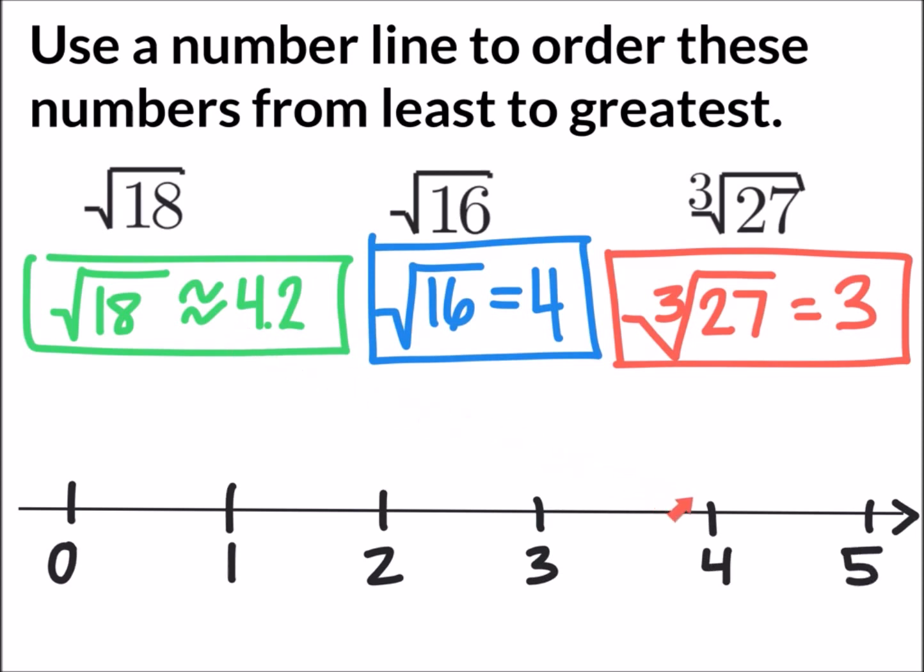4.2 is the square root of 18. We're going to draw that in on the number line and label it. The square root of 16 equals 4, that would go right on the value of 4. We're going to draw in and label the square root of 16. And the cubed root of 27 equals 3, another whole number. We're going to draw that in and label it as the cubed root of 27.